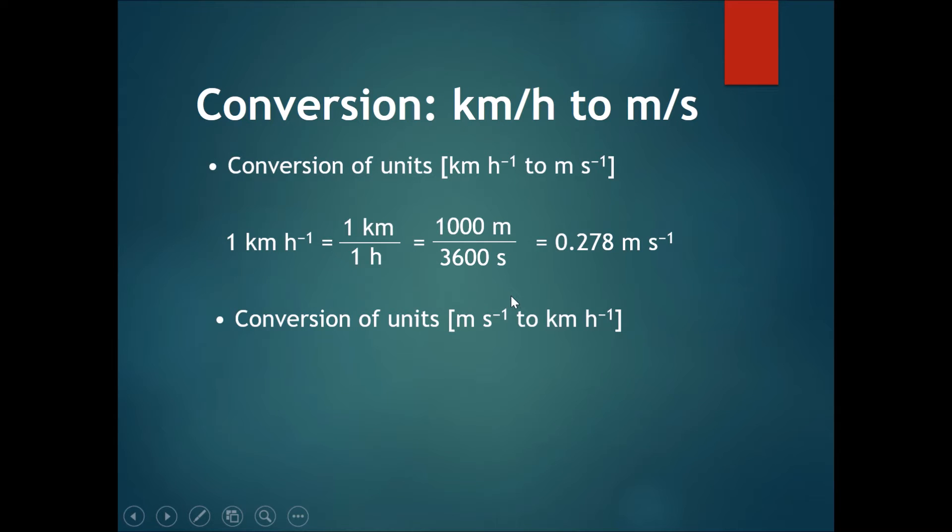Then for converting meters per second into km per hour, let's take a look at one meter per second. Doing this we once again put it down as one meter divided by one second. Therefore we need to convert these two into km and hours.